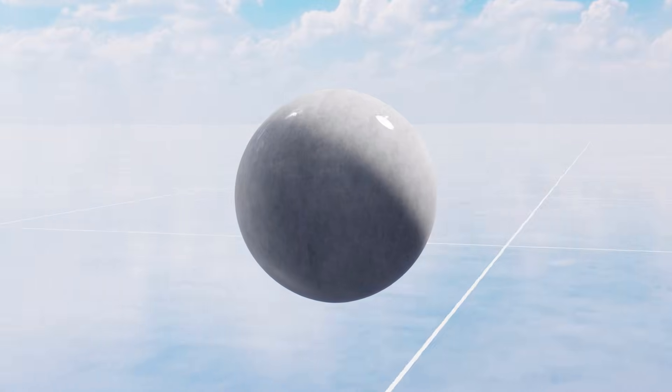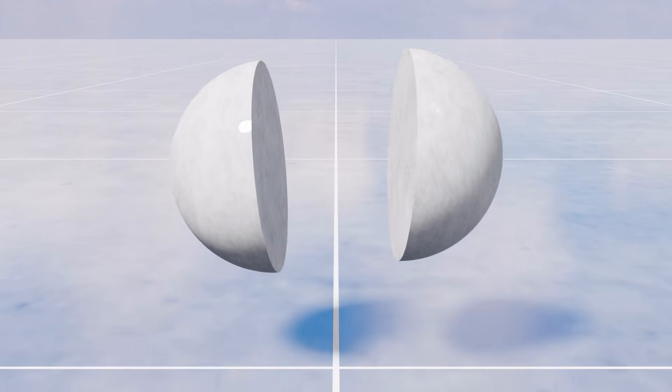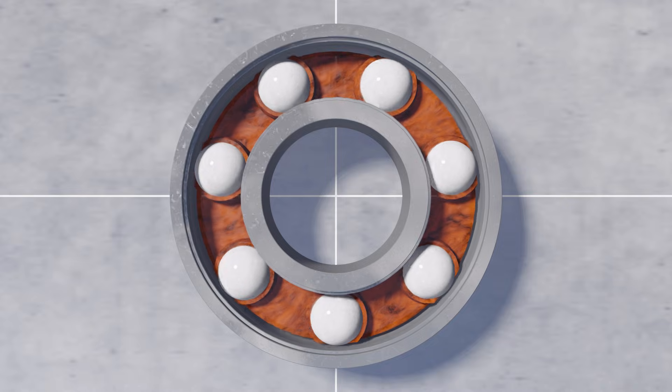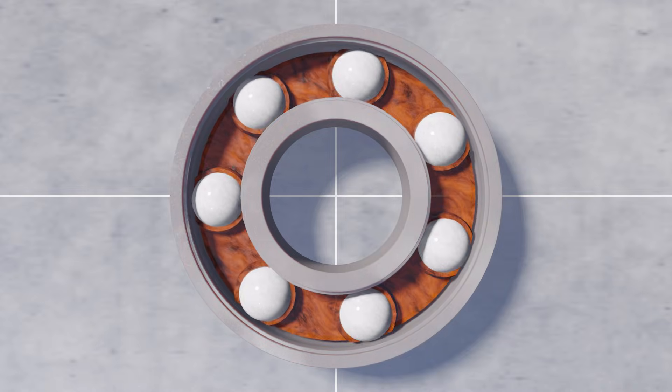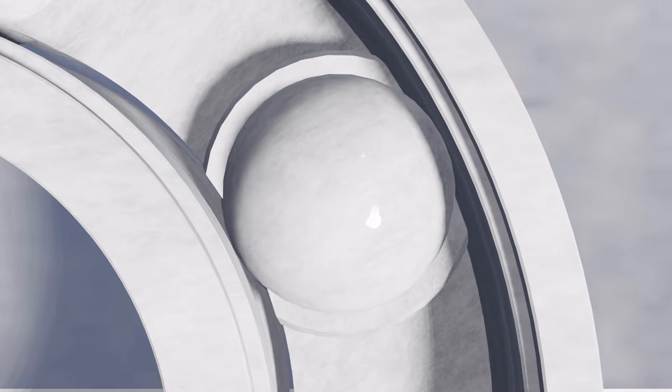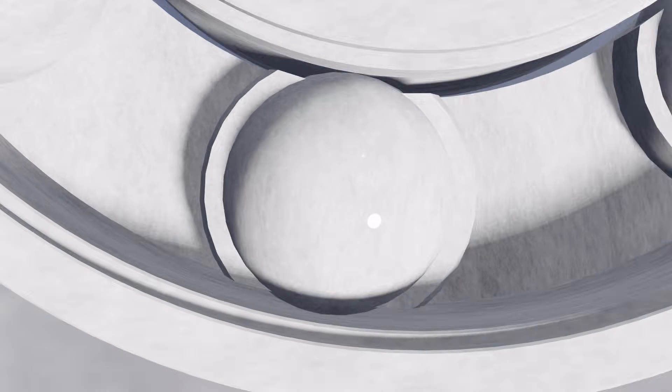But ceramics do have drawbacks. Since they're essentially pottery, ceramics can crack when the load is concentrated on a single point. And even if the balls don't rust, the bearing frame is usually still metal and may rust. Full ceramic bearings, where even the frame is ceramic, are known to break easily.